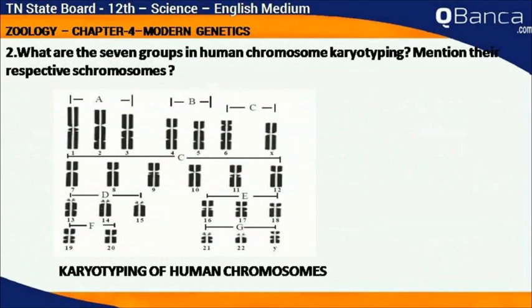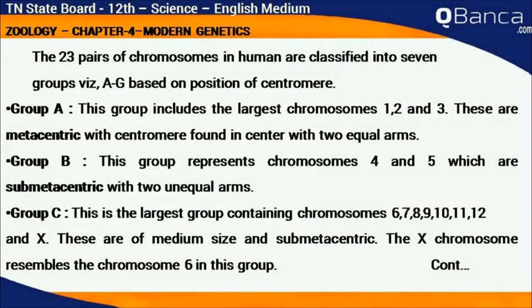What are the 7 groups in human chromosome karyotyping? Mention their respective chromosomes. The 23 pairs of chromosomes in humans are classified into 7 groups, A to G, based on the position of the centromere.